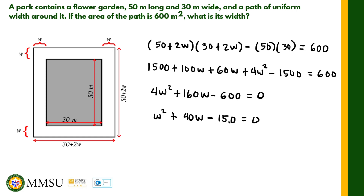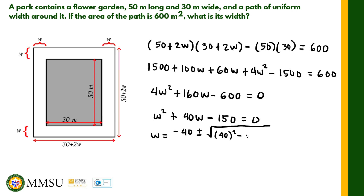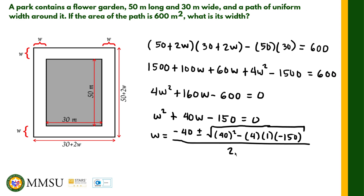After exhausting every factor of 150, we find that w squared plus 40w minus 150 is not factorable. The square root property cannot be used because we have a linear term, 40w. So either completing the square or the quadratic formula is applicable. Using the quadratic formula: w equals negative b, which is negative 40, plus or minus the square root of b squared minus 4ac — that's 40 squared minus 4 times 1 times negative 150 — all over 2a, which is 2 times 1.